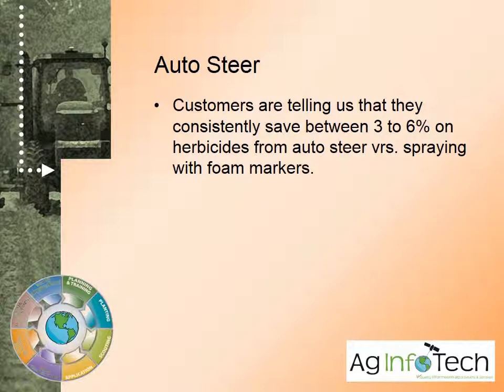Starting with auto steer — basically, this is where we can steer the sprayer or tractor that's pulling the sprayer or fertilizer spreader automatically, through the use of either our assisted steering systems or the complete hydraulic auto steer system. It basically drives the line for you. Customers are telling us that they consistently save between 3 to 6 percent on herbicides from the use of auto steer versus spraying with foam markers.